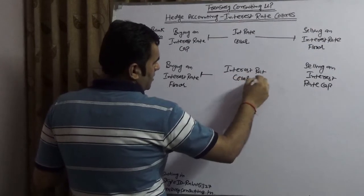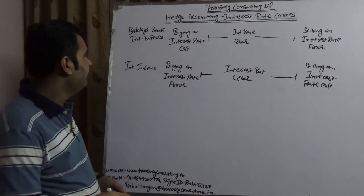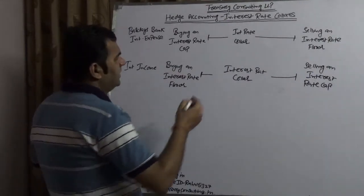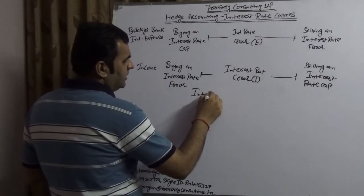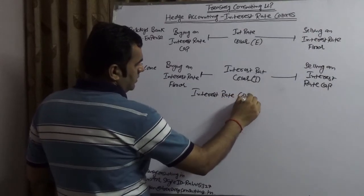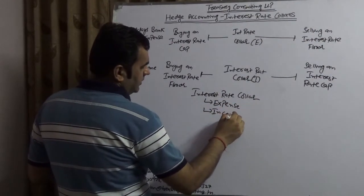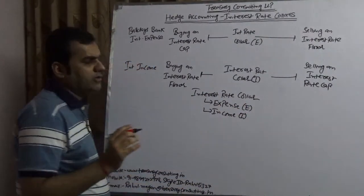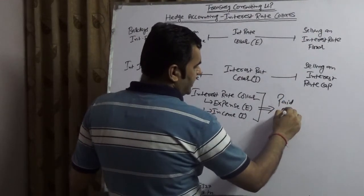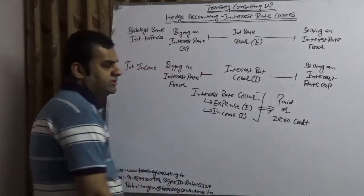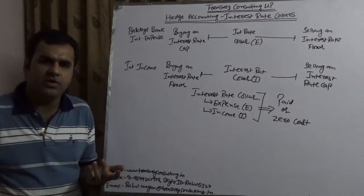The point we need to understand is that whether it is an interest rate collar for expense or for income, as per our norms both types are going to be of two types: either they are paid collars or they are zero cost collars, also known as zero cost callers.